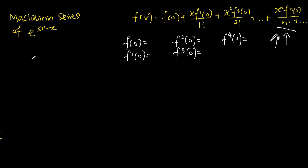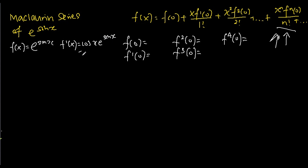We let the function f(x) be equal to e to the power of sine x. When we differentiate the function one time, we get cosine x times e to the power of sine x, which is also the same as cosine x times f(x), because e to the power of sine x is f(x).